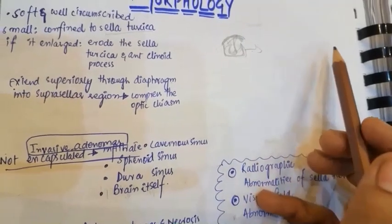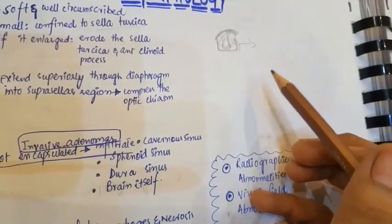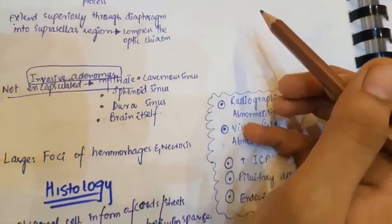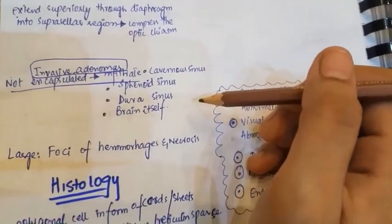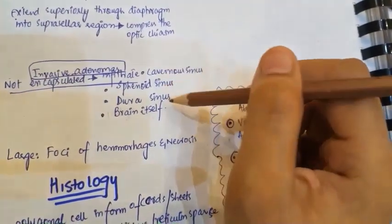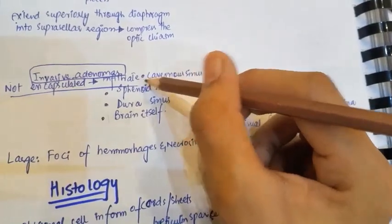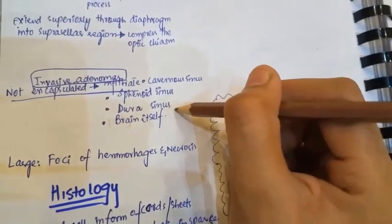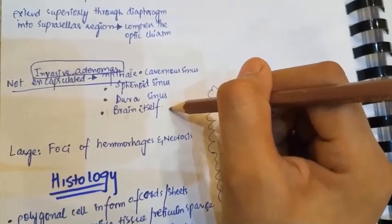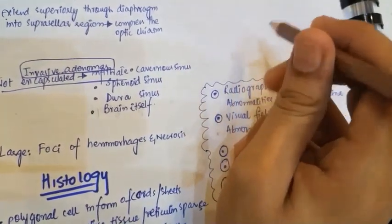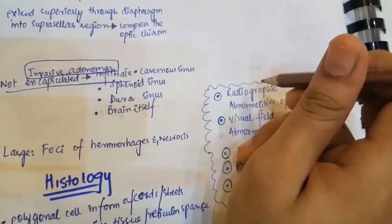When adenomas extend into the suprasellar region, they compress the optic chiasm and produce blurring of vision. Invasive adenomas are not encapsulated; they infiltrate the cavernous sinus, sphenoid sinus, dura, and the brain itself. In invasive adenomas, we can see foci of hemorrhage and necrosis.